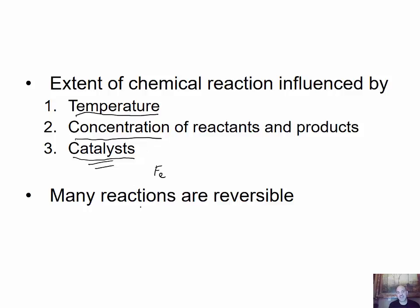Many reactions can be reversible. For example, reactant A and reactant B can go forward to form product AB, but you'll also see reactions represented with a double arrow, meaning the reverse can also happen — AB can break back into A and B. We'll see reactions like that in our study of biology.